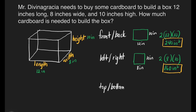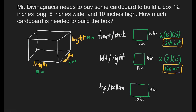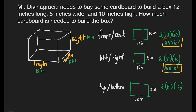Now for the top and bottom faces: it has a length of 12 inches and a width of 8 inches. That's 8 inches times 12 inches times 2. 8 times 12 is equal to 96; 96 times 2 is equal to 192 square inches. This is for our top and bottom faces.